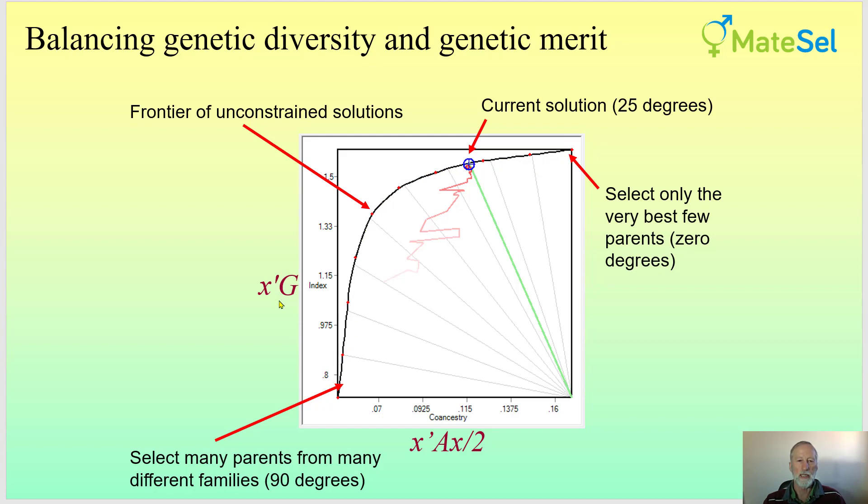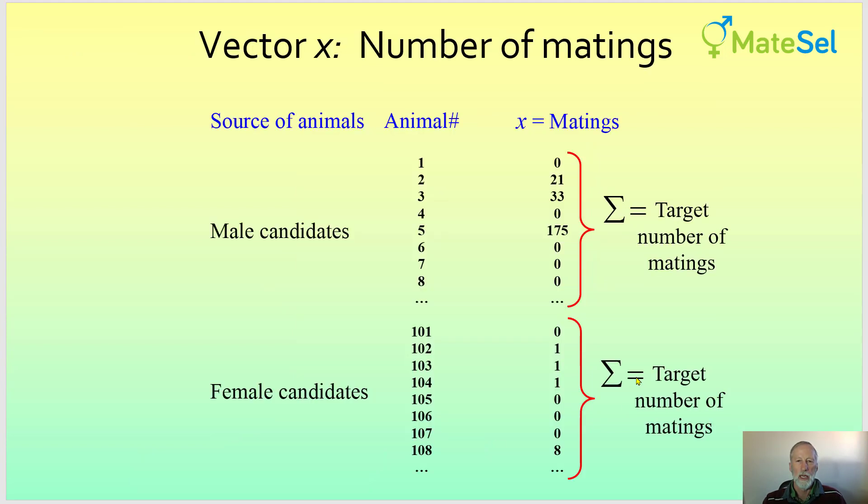So let's look at these two axes, x'G and this one, the parental co-ancestry. In MateSel, the vector x is actually used to hold the number of matings allocated to each male candidate and to each female candidate.